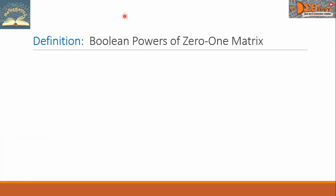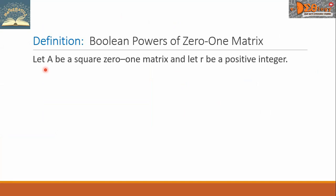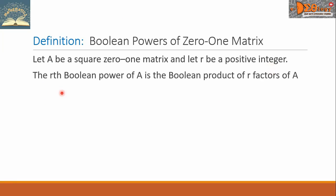Let us define boolean powers of 0,1 matrices. Let capital A be a square 0,1 matrix and let R be a positive integer. The R-th boolean power of A is the boolean product of R factors of A, denoted by A raised to R.